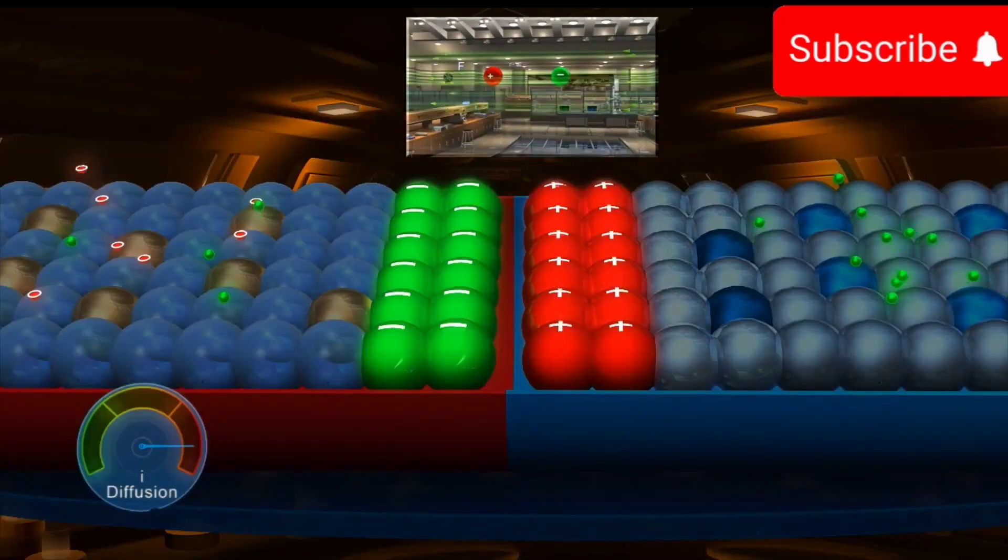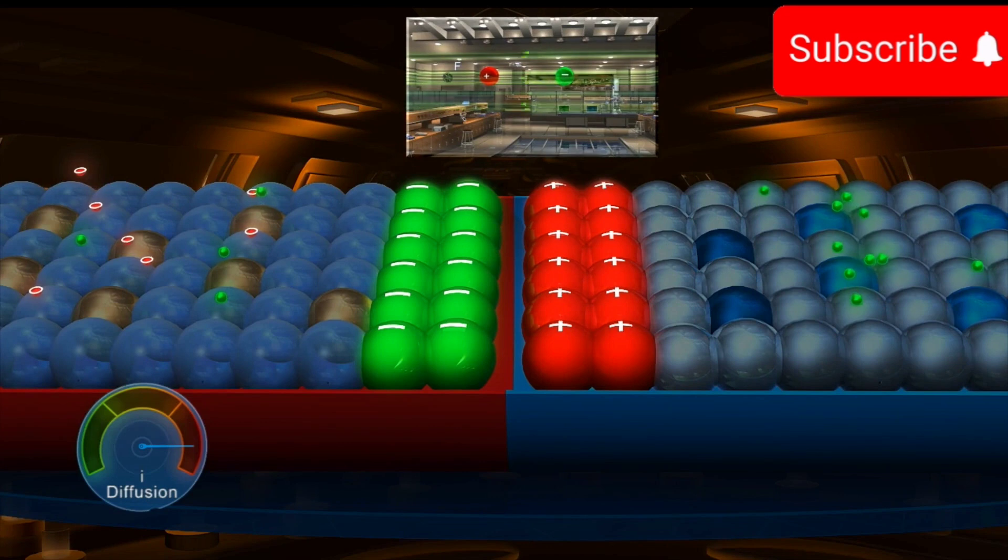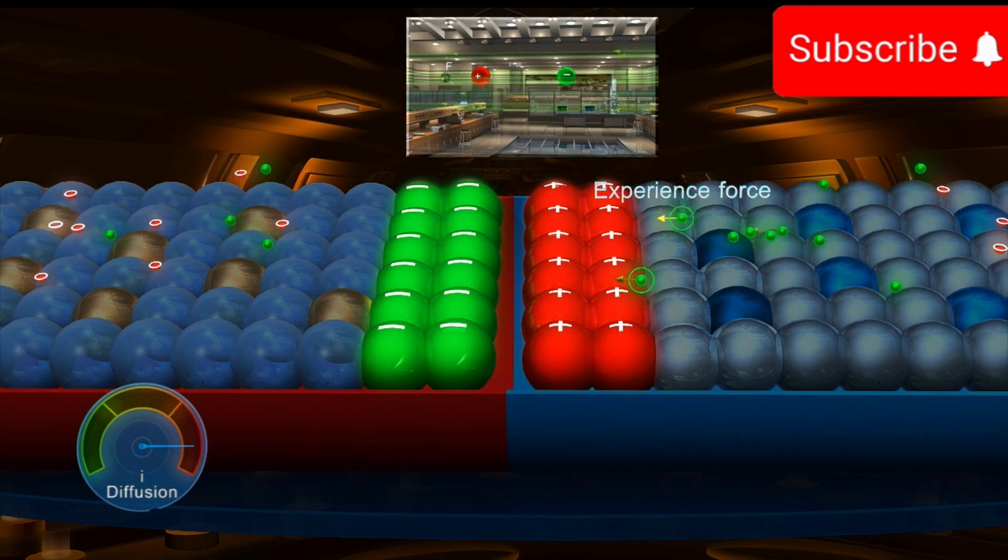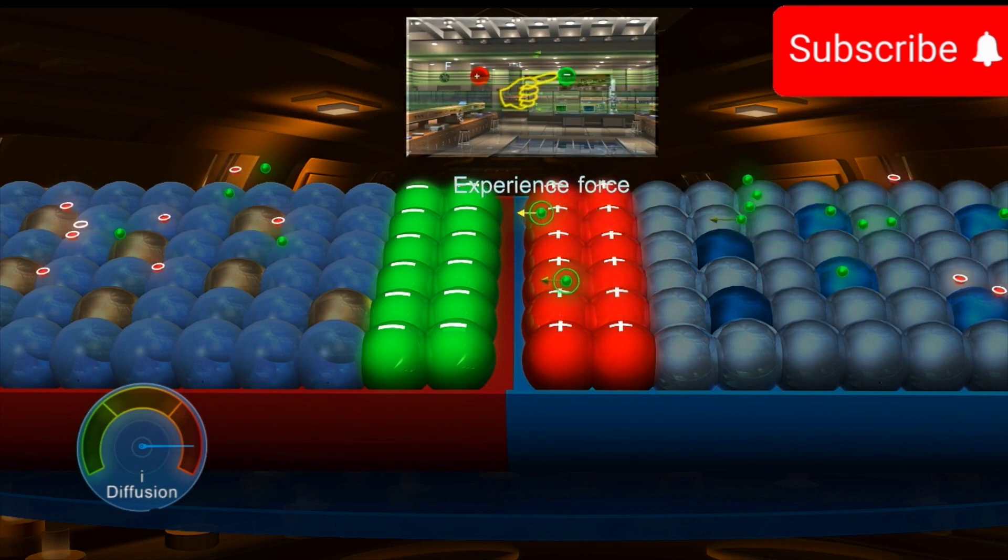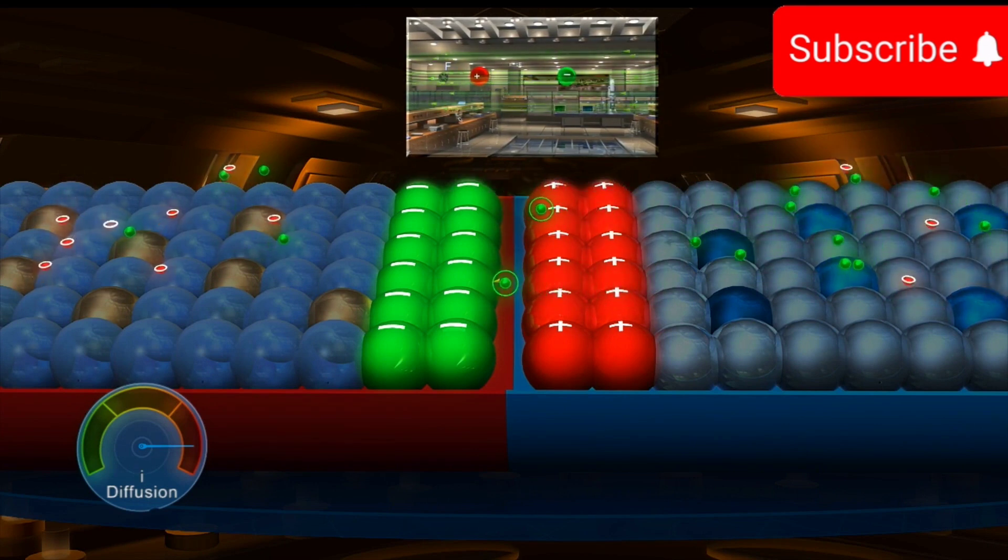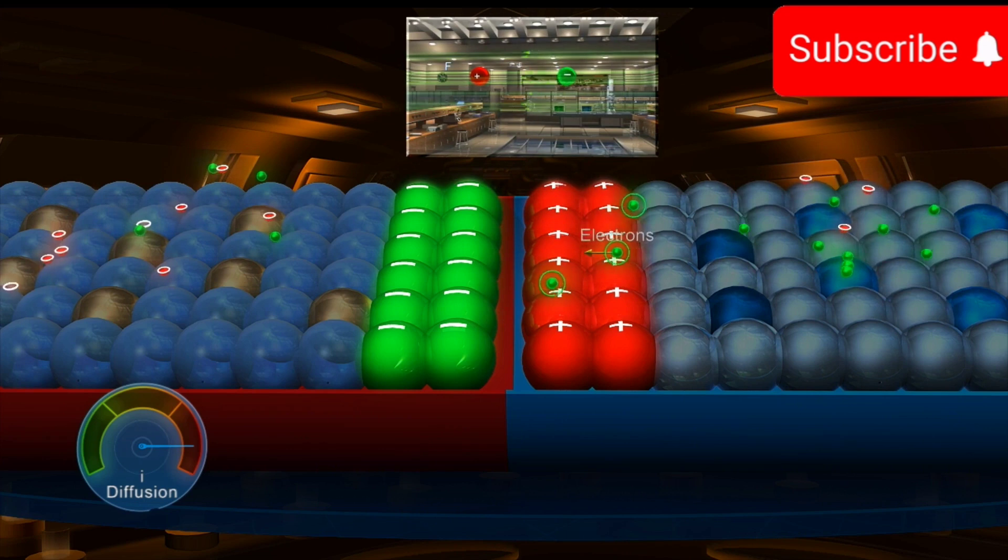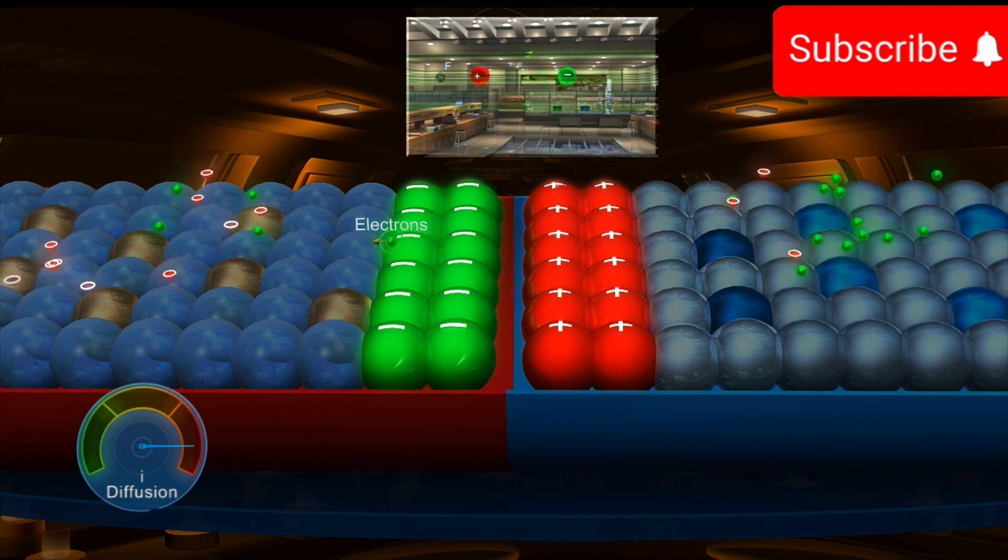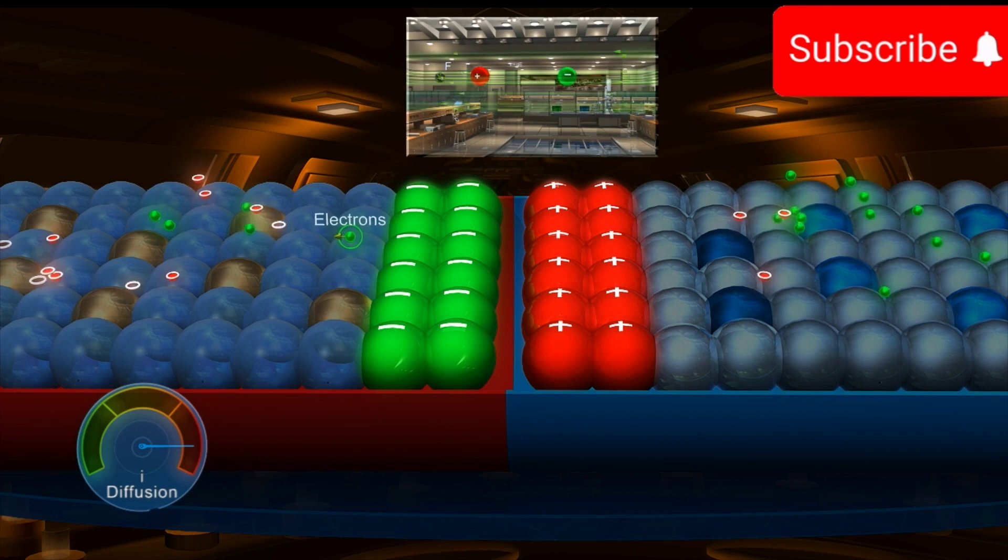Let us apply this to the carriers in the field region. The electrons in the N region approaching the junction experience a force EE in a direction opposite to E and are then pushed back into N region. Only the electrons having sufficient kinetic energy to overcome the force EE cross the junction and diffuse into the P region.